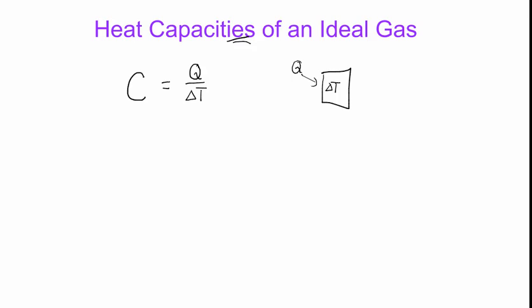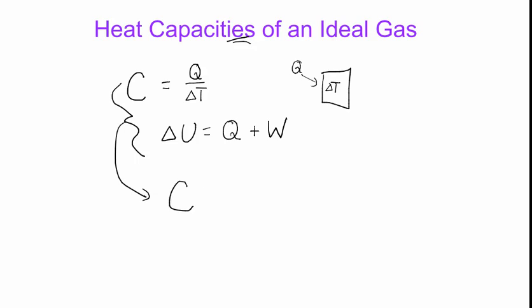Another equation we looked at before was the first law of thermodynamics. The first law says that the change of internal energy of the system is equal to the heat that flows into it plus the work that's done onto it. If we combine these two equations, we get that the heat capacity is equal to the change in thermal energy minus the work done on the system, divided by the change in temperature.